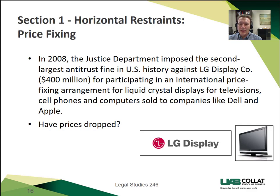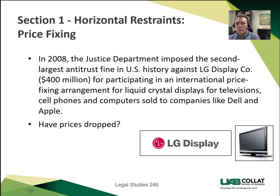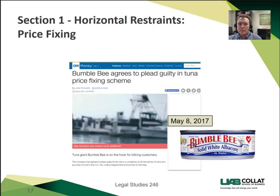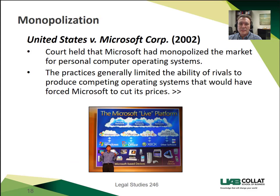Here's an example of price-fixing: LG Display, a major maker of flat screen TVs using liquid crystal displays, was fined a great deal of money for conspiring with competitors to keep prices high. Another example: Bumblebee Tuna agreed to plead guilty to price-fixing for tuna in May of 2017. Another thing prohibited by the Sherman Antitrust Act is acting alone to negatively affect competition. Section two says you can't try to monopolize by yourself — that's what Microsoft was accused of in the early 2000s. Microsoft made it so only Internet Explorer could be your browser if you used Windows, and that was found to be the act of a monopolist.